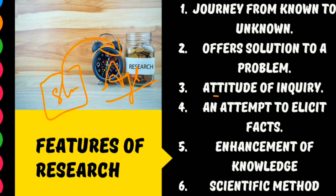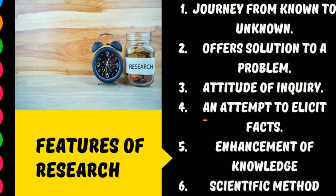The next feature is 'an attempt to elicit facts.' In research, we make multiple attempts related to a particular topic or issue so that we can elicit — meaning find out — the facts. There is a particular existing fact, and we need to find out new facts related to it, so we must make multiple attempts through research.